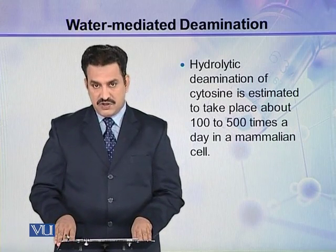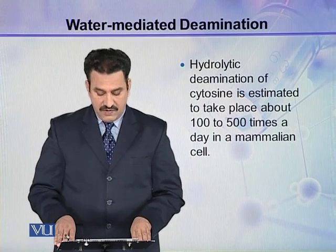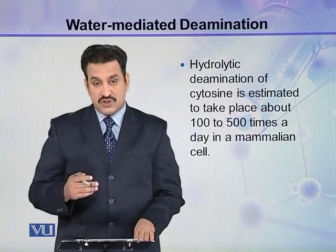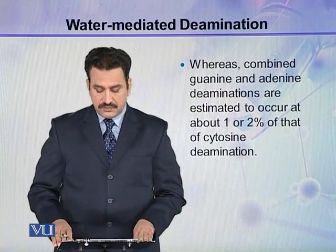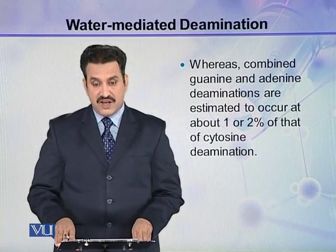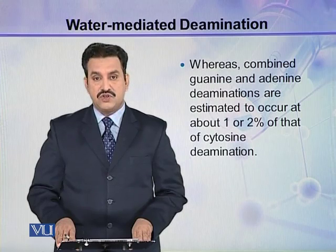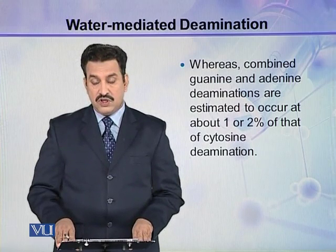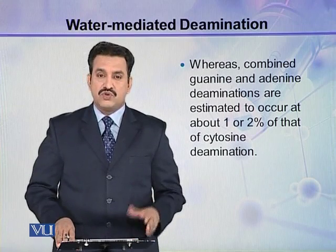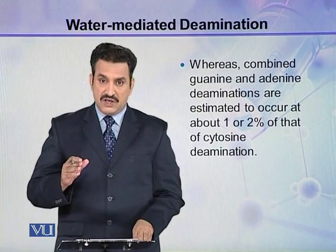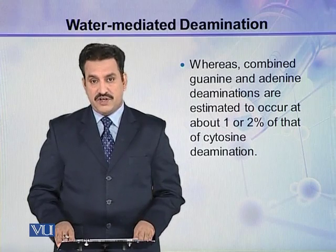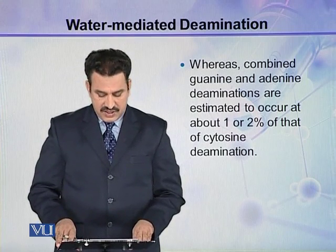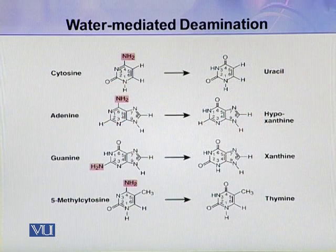Hydrolytic deamination of cytosine is estimated to take place about 100 to 500 times a day in a mammalian cell. This is a large number and is a significant reason for mutation in DNA. Combined guanine and adenine deamination are estimated to occur at about 1 to 2% of that cytosine deamination rate, because purine bonds are more difficult to break compared to pyrimidine bonds.